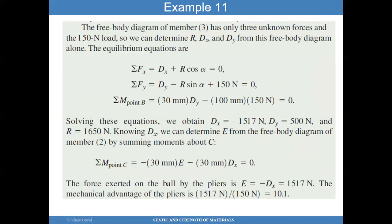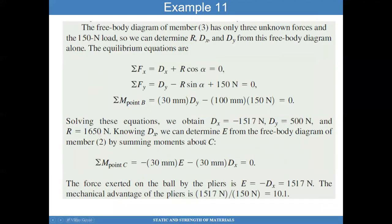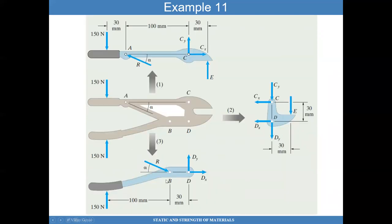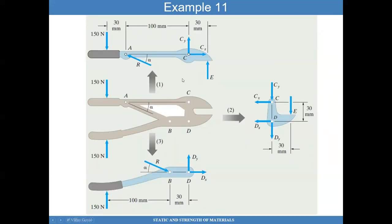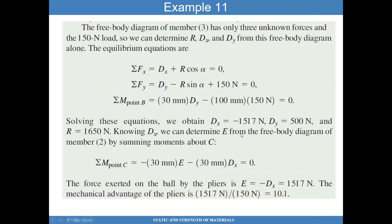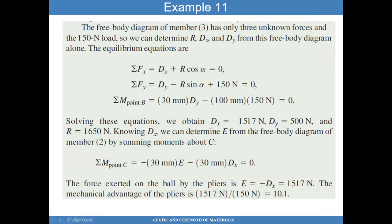Example eleven: what forces are exerted on the ball at E as a result of the 150 N force applied on this plier? I identify the pin joints. Isolating the top portion: it's a pin joint giving reaction R, a pin joint at C giving CX and CY, and a normal force at bolt E. I have 150 N applied. For the bottom portion: 150 N, reaction R along AB, and pin joint reactions CX and CY. The free body diagram of member three has only three unknowns — R, DX, and DY. The equilibrium equations are: DX plus R cosine alpha equals zero; DY minus R sine alpha plus 150 N; and summing moments about B eliminates DX, allowing me to find DY. Plugging DY in gives R, then plugging R in gives DX. All three diagrams can be used together to solve for all unknowns.